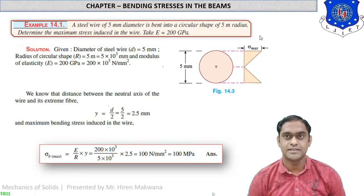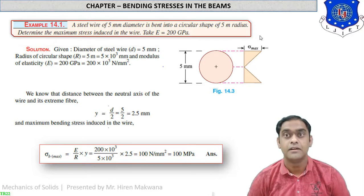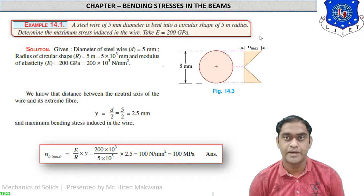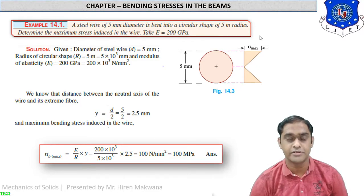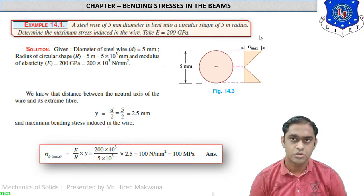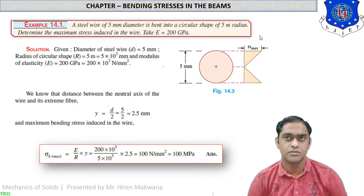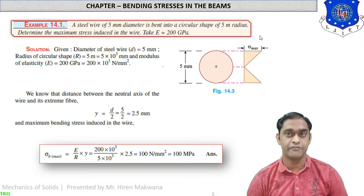Hello and welcome students. This is lecture number 49 and today we will discuss bending stresses in beams in detail. In the last lecture we derived the relation between the bending stress, modulus of elasticity, the distance y from the neutral axis, and the radius of curvature. These four quantities are arranged to form a mathematical equation. Let us start with numericals — two or three examples — to see how bending stress or missing values can be found.